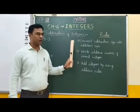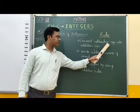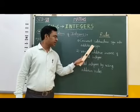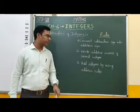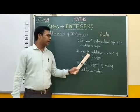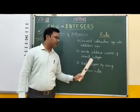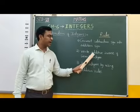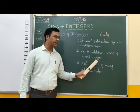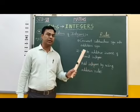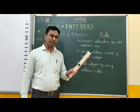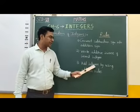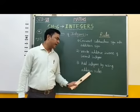First rule: convert the subtraction sign into addition sign. Second rule: write the additive inverse of the second integer — that is, the integer after the subtraction sign. Third rule: add the integers by using the addition rules.